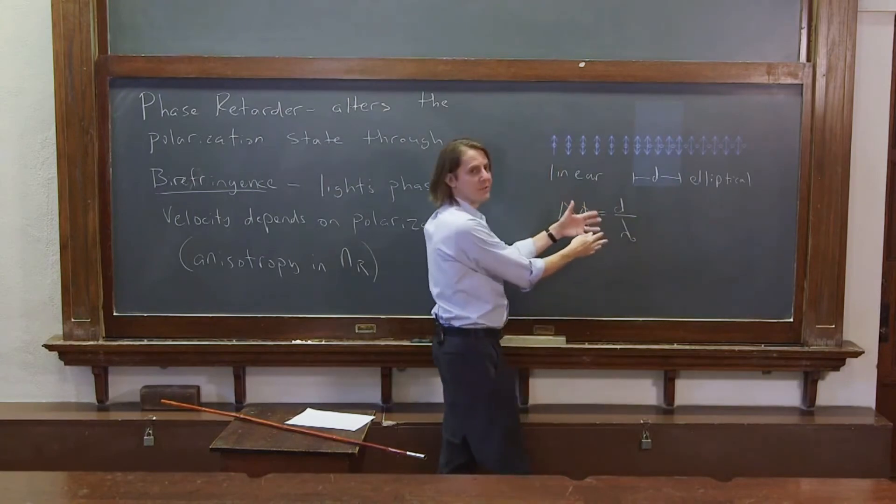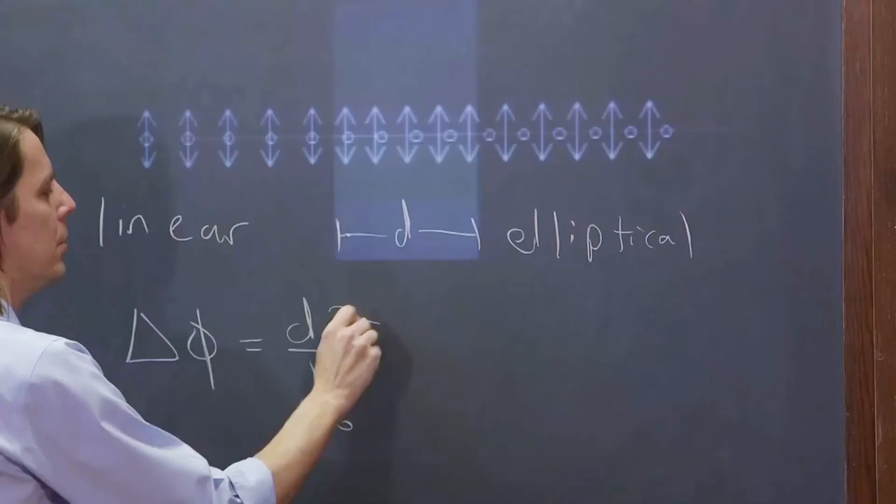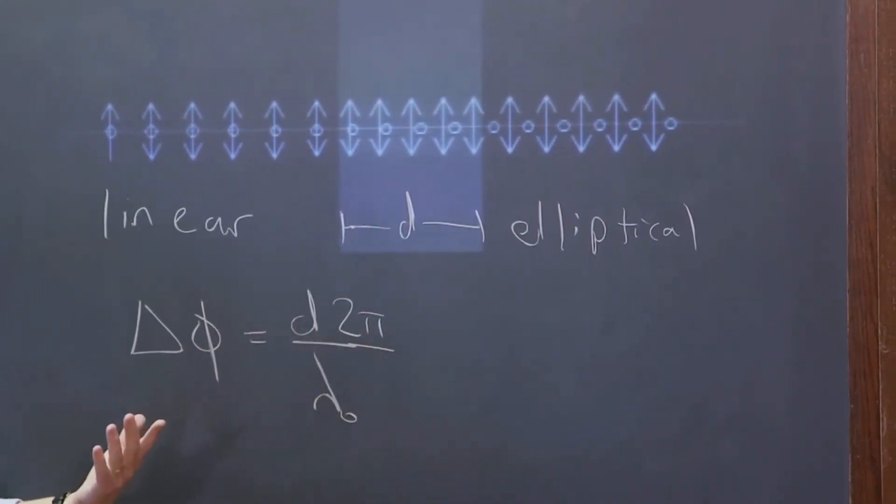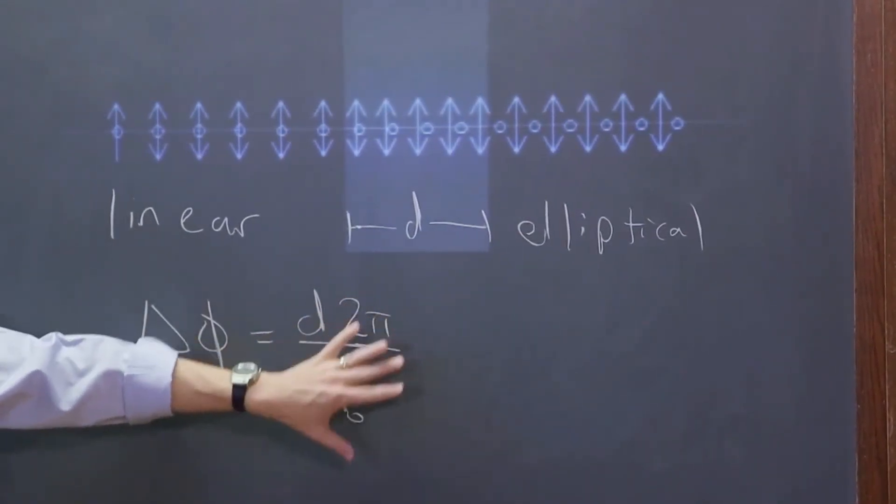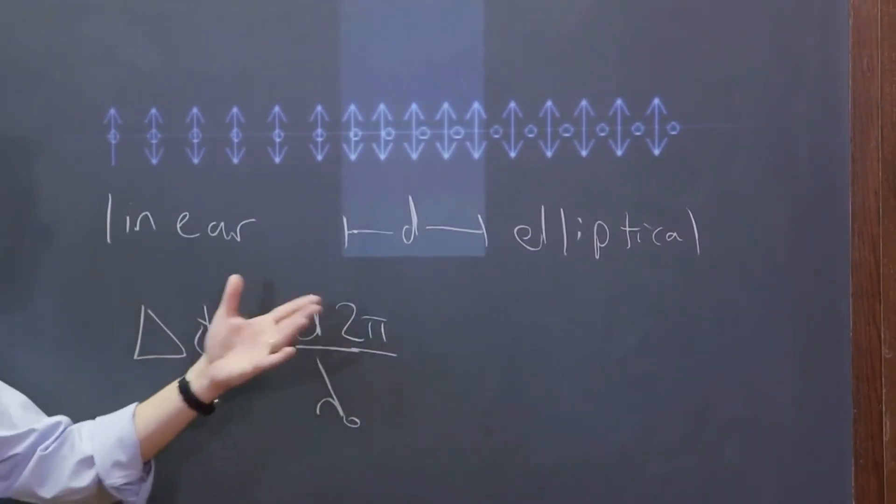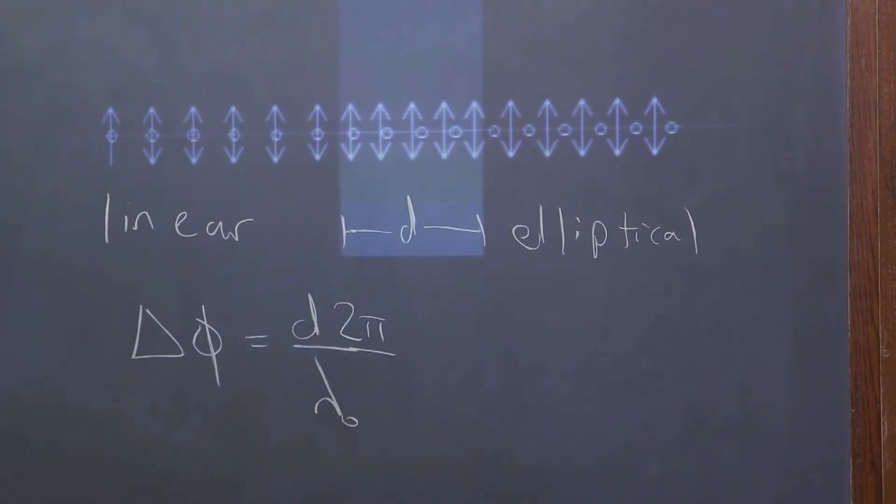That would be the fractions of a cycle, but you need the 2π there. d and 2π - if this is fractions of a cycle, this puts it in radians times 2π. Or you can think of this as just k, 2π/λ₀ is the vacuum wave number. So d is just how many cycles does it go through.